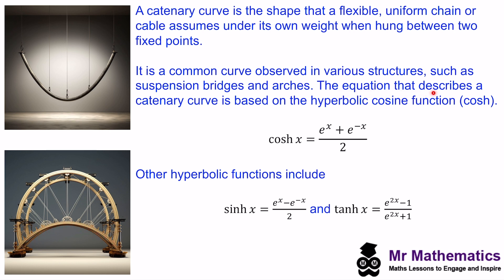The equation that describes the catenary curve is based on the hyperbolic cosine function, which we call cosh. The equation for cosh is (e^x + e^(−x)) / 2. This gives rise to other hyperbolic functions: sinh(x) = (e^x − e^(−x)) / 2, and tanh(x) = (e^(2x) − 1) / (e^(2x) + 1).